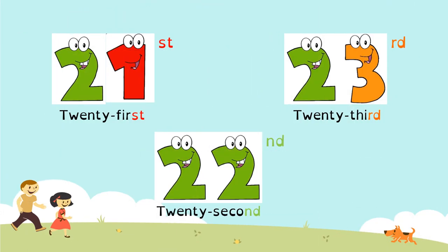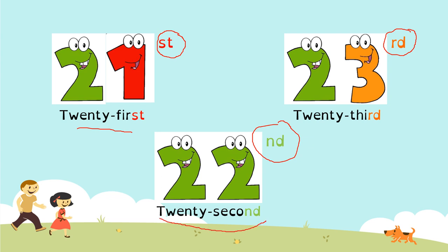What have we got here? Look — we have 'st,' we have 'nd,' and we have 'rd.' So this number is not 21, it's 21st. And this number is not 22, it's 22nd. And this number is not 23, it's 23rd.